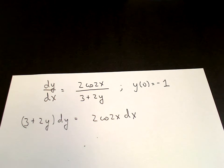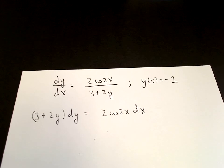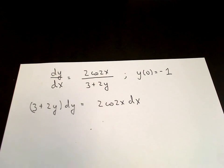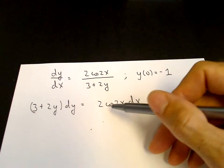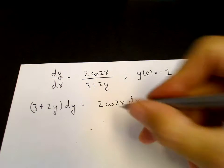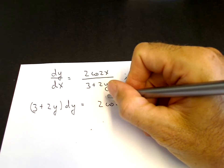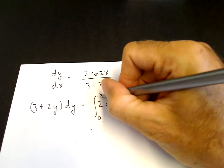So we have 3 plus 2y dy equals 2 times cos2x dx. This is the separation stage. So we've shown that the equation is separable by able to write a function of y times dy equals a function of x times dx. Then we can integrate. x goes from starting from 0.